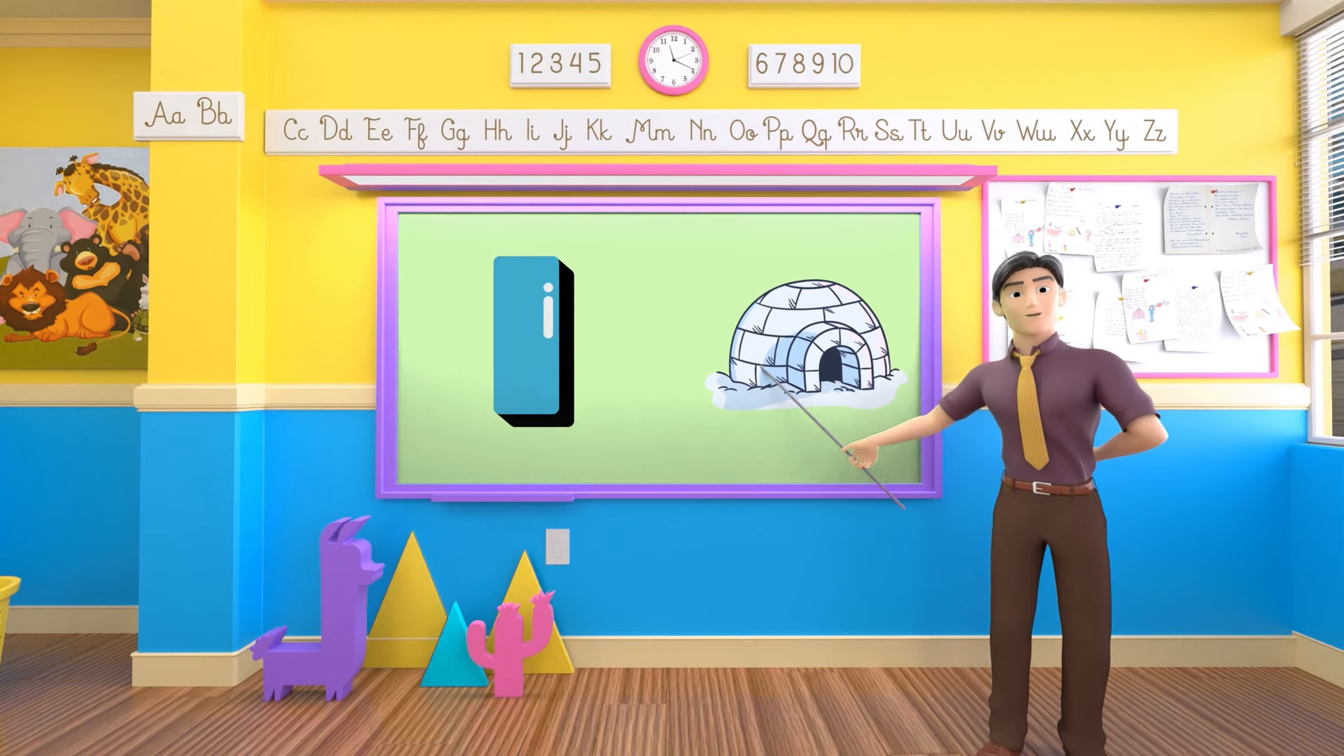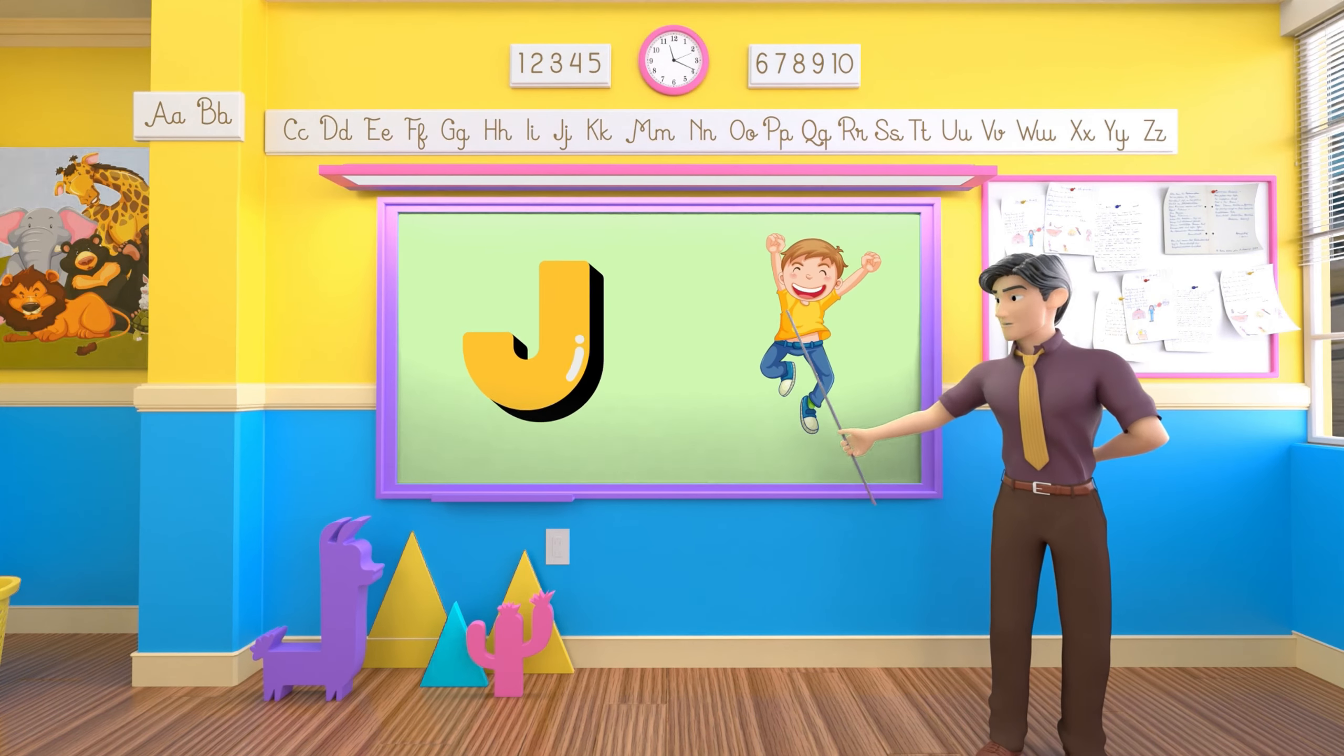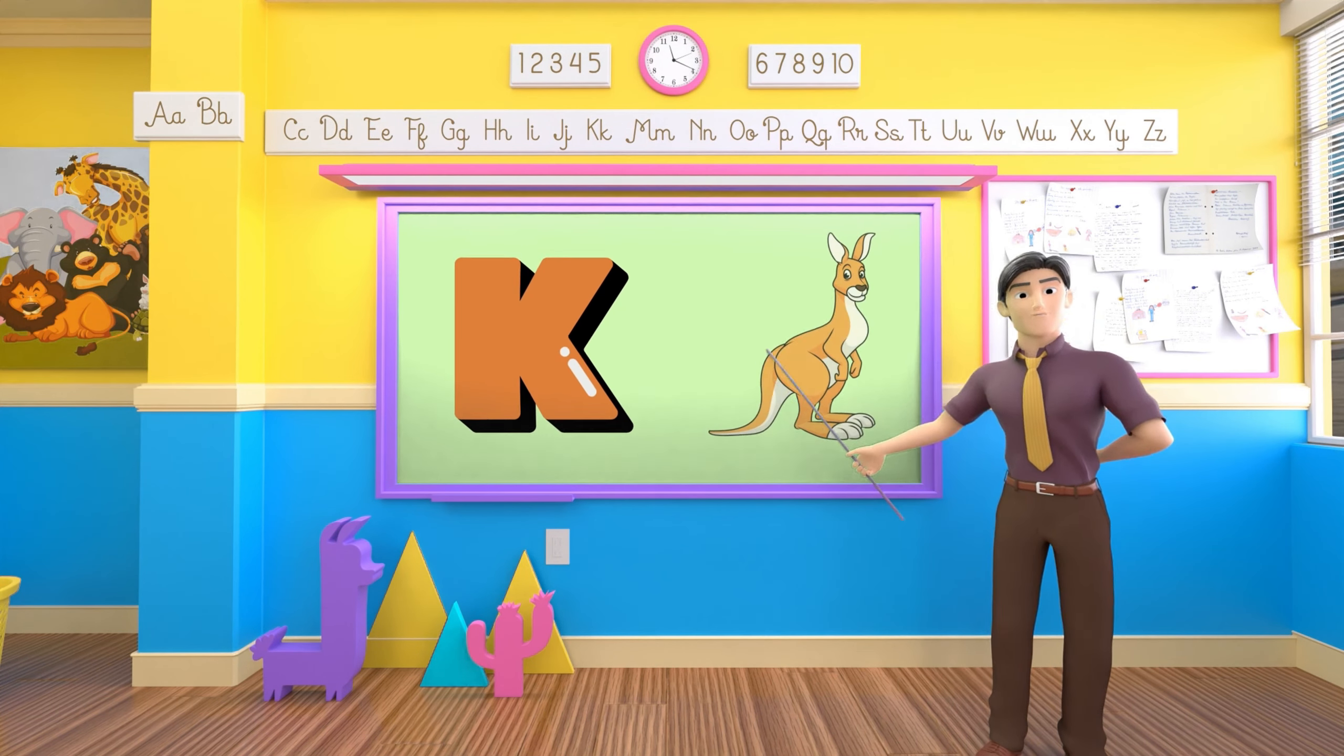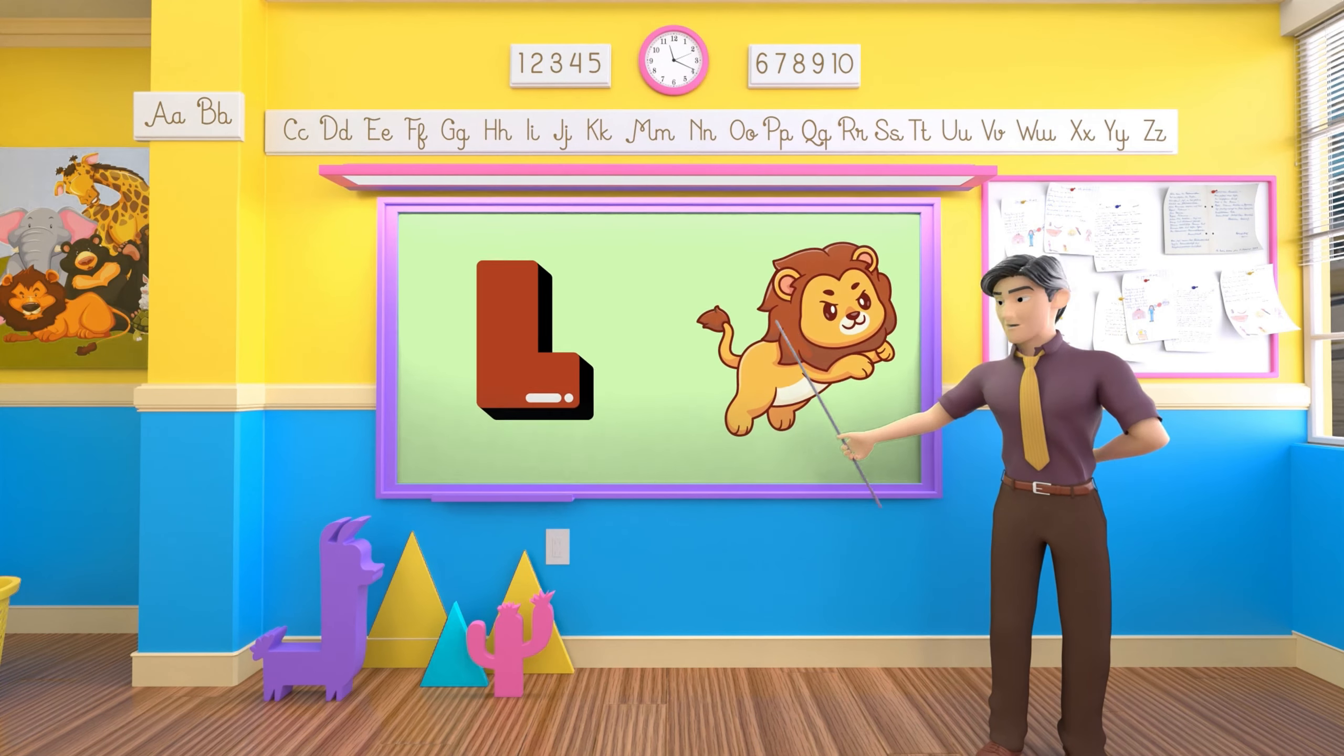I is for igloo, i-i-igloo. J is for jump, j-j-jump. K is for kangaroo, k-k-kangaroo. L is for lion, l-l-lion.